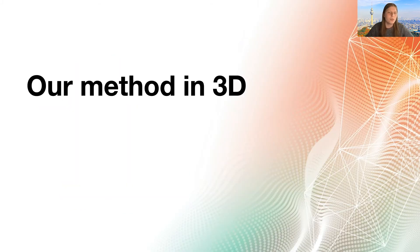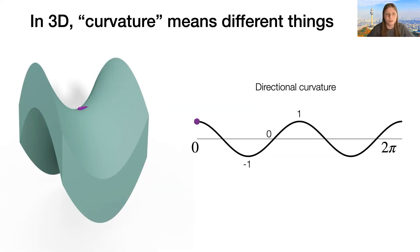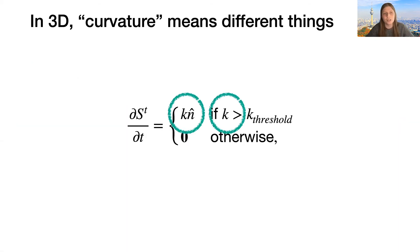Okay, but most of the applications of the morphological closing that I showed you before actually use 3D shapes, not 2D curves. So how do we translate the flow we just defined to 3D? The main problem we'll encounter is that in 3D, curvature can mean different things. Every point on a surface, like this purple point here, curves differently and by different values depending on the direction that we're looking at. So how do we translate the curvature in our formula, the k here, into 3D?